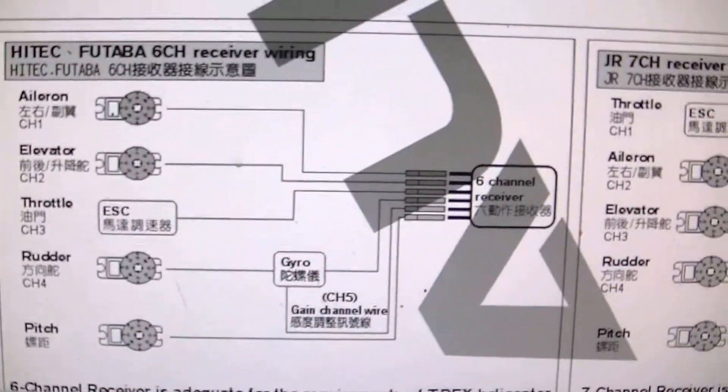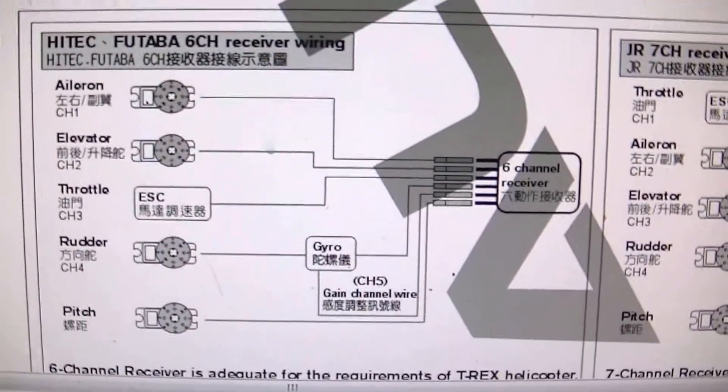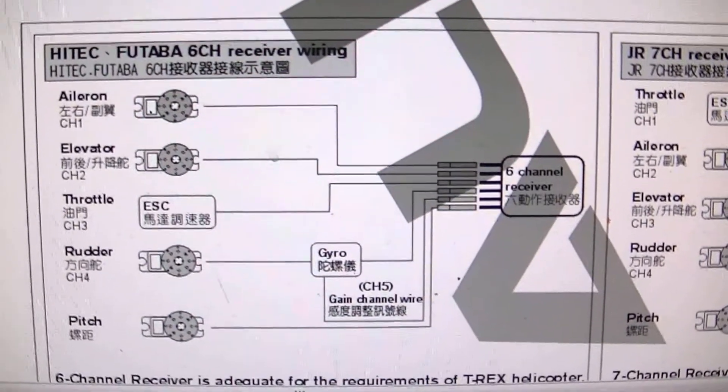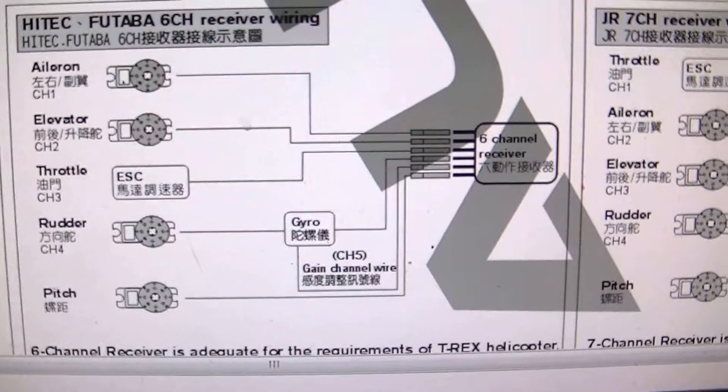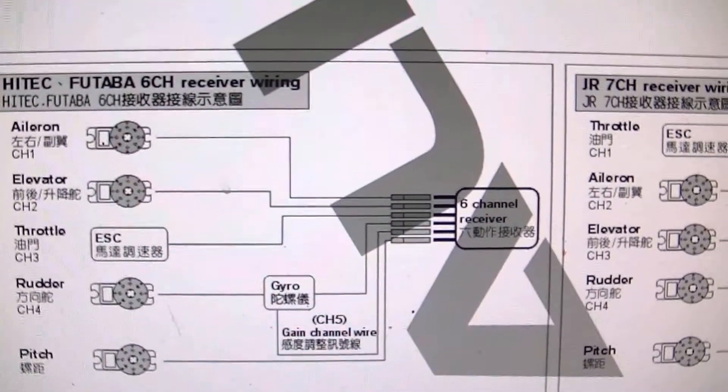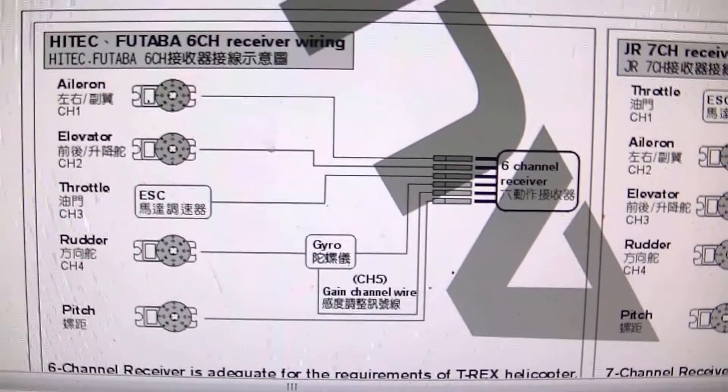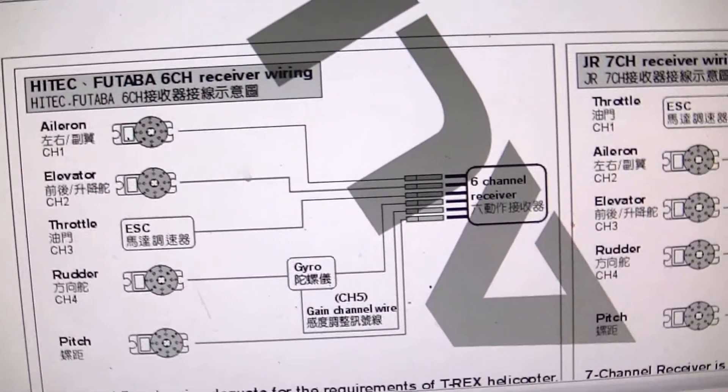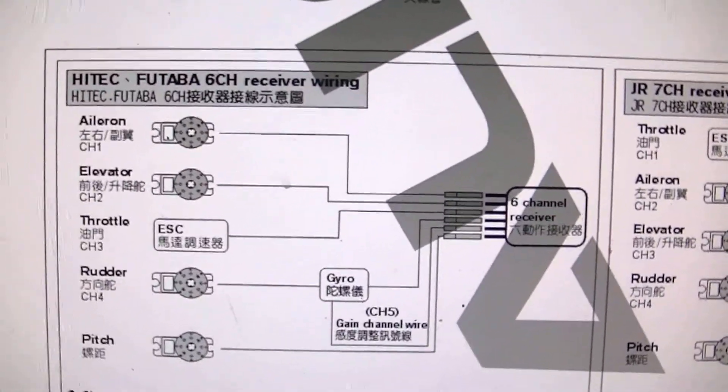Here's your Futaba servo receiver setup showing channel 1 is Aileron, channel 2 is Elevator, channel 6 is Pitch, channel 4 is Rudder, and channel 5 would be your Gyro Gain.